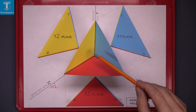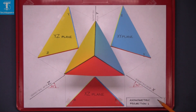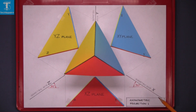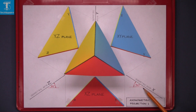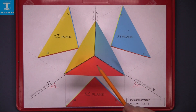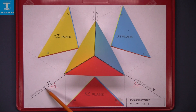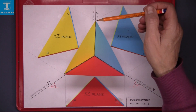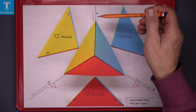When we go to set up axonometric projection, we have to set up the isometric axis. This axis from the center out at 30 degrees is isometric axis X. This axis in this direction is isometric axis Z, and it's drawn at 30 degrees. The vertical axis is isometric axis Y.